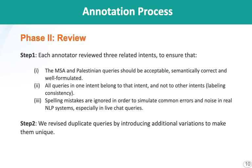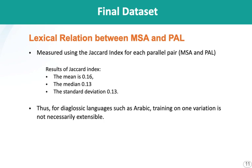We also removed duplicate queries by adding variation to any duplicated query. There is a big lexical difference between MSA and Palestinian dialect. They're lexically different, and we can see that in the Jaccard index, which is 0.16 — very low. This indicates that Arabic is a highly dialectal language, and training one model on one dialect doesn't mean it's going to perform well on a different dialect or variation of the language.